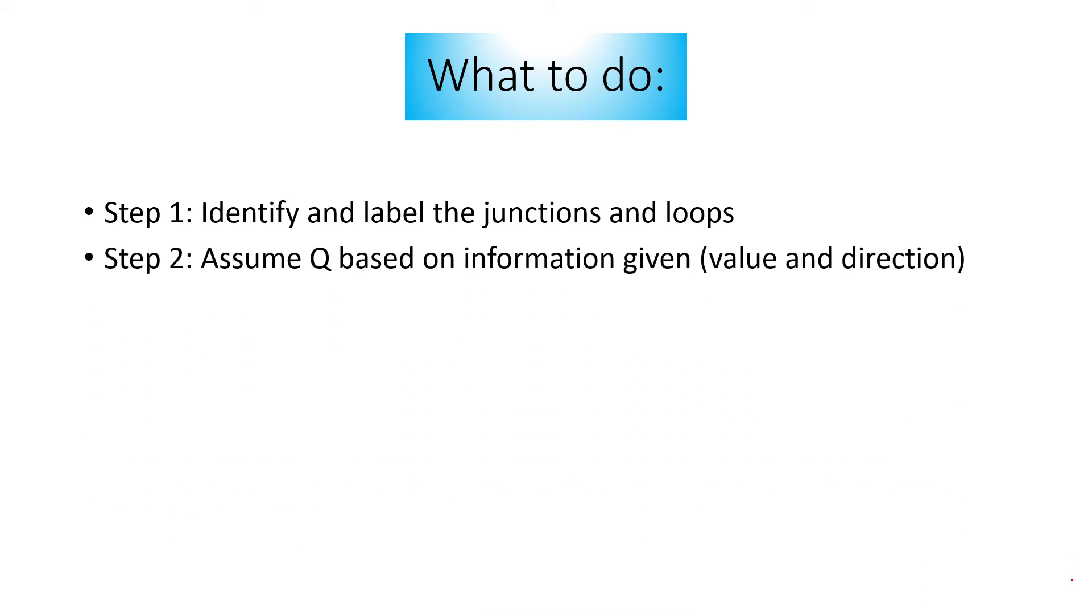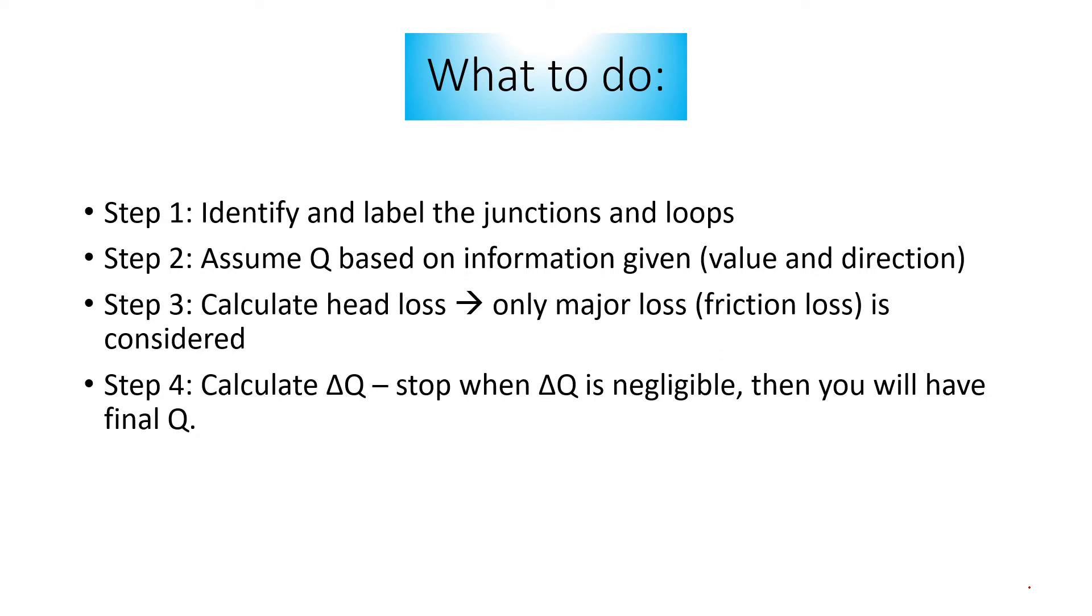What to do in this Hardy Cross Method? Step 1, you identify and label the junctions and loops. In step 2, you assume Q based on information given. This is in terms of value and also direction of the Q. In step 3, you calculate head loss. For this head loss, only major loss is considered. So major loss is from friction loss. In step 4, you calculate delta Q. You stop the iteration when delta Q is negligible. So then you will have final Q. So only four steps in Hardy Cross.